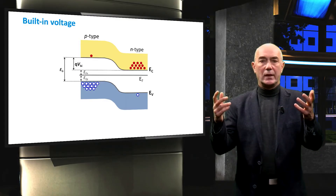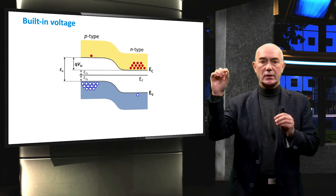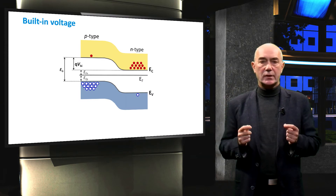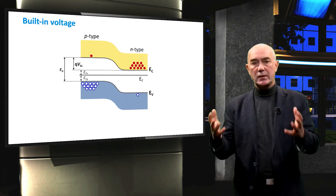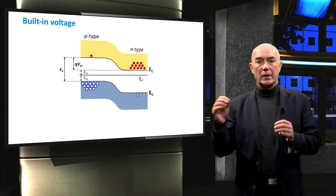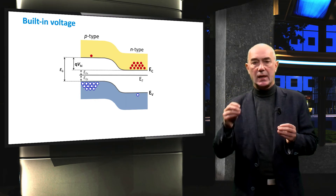Our next learning objective is to calculate the width of the depletion region. When there is a net charge present in the depletion region, there must be an electrostatic potential difference between the edges of the depletion region. We call this electrostatic potential difference the built-in voltage of a PN junction. This built-in voltage is clearly visible in the band diagram of the junction, where there is a difference between the position of the energy levels of the conduction and valence band edges at the opposite sides of the PN junction.